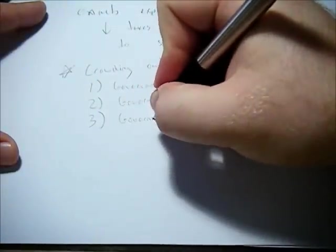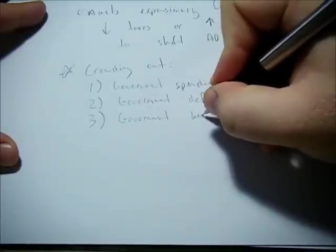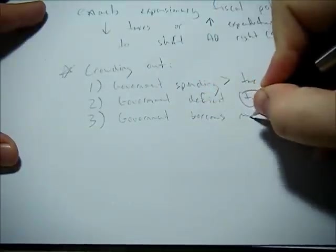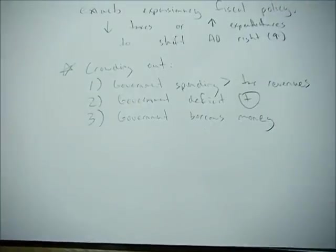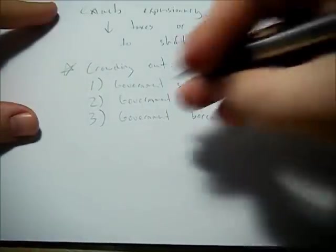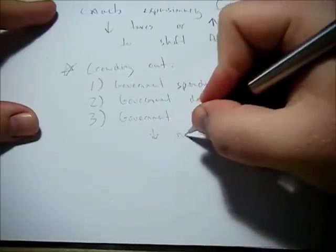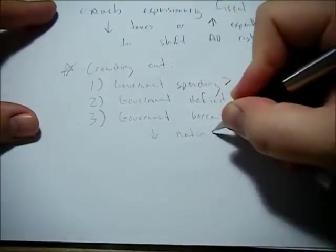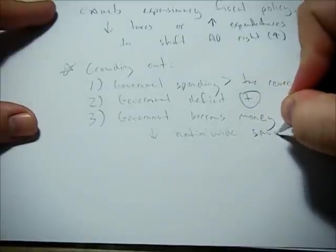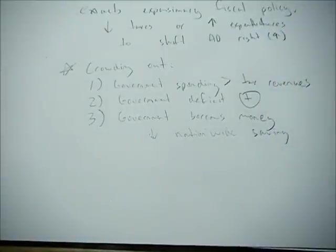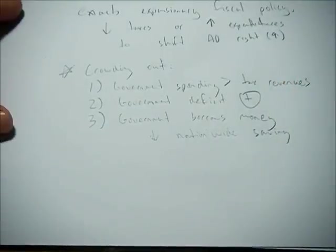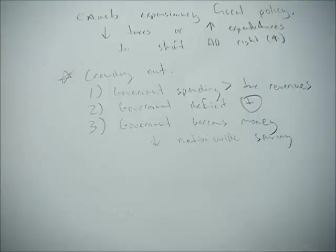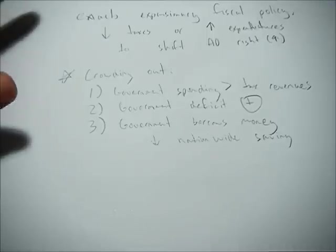Government borrows money. When the government borrows money, that decreases nationwide saving. In order to maintain equilibrium in the loanable funds market, the interest rate must rise to dissuade investment and to increase more savings. Otherwise we won't be in equilibrium.